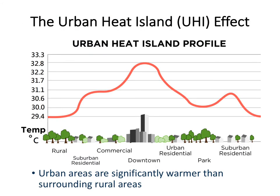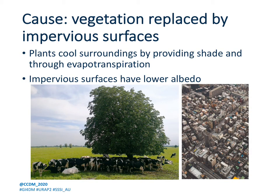The urban heat island effect describes the phenomenon where urban areas are significantly warmer than their surrounding rural areas. This phenomenon is prevalent worldwide in cities of all different sizes. Three major factors contribute to the UHI effect. First, replacing vegetation with impervious surfaces leads to warming. Plants tend to cool their surroundings by providing shade and through evapotranspiration, so when vegetated areas become developed, this cooling factor is lost. Additionally, impervious surfaces like asphalt and roofing shingles are usually made from dark-colored materials with lower albedos than vegetation, so they absorb more solar radiation, which then increases local temperatures.